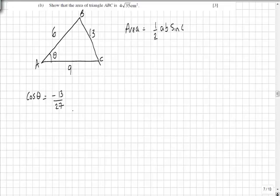However we don't have sine theta, but we could use Pythagoras here to find sine theta. Now cos theta is adjacent over hypotenuse, so 13 and 27 would go there and there, which means that this side here would be the square root of 27 squared minus 13 squared.